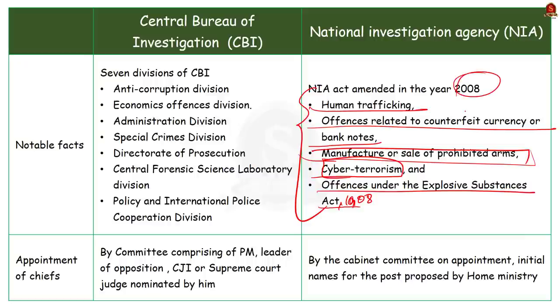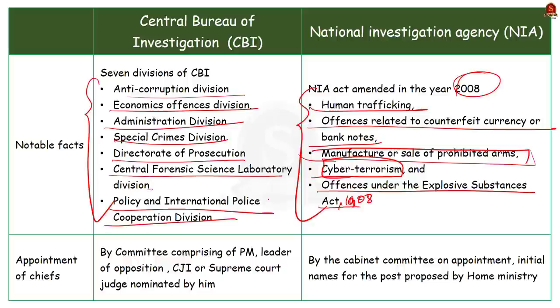Now coming to the organization of CBI. Presently the CBI has seven divisions which are working under the union government. They are firstly anti-corruption division, second is economic offenses division, third is administration division, then special crimes division, directorate of prosecution, central forensic science laboratory division, and finally policy and international police cooperation division. So these are all the seven working divisions of CBI. Here note that the role of special crimes division is supplementary to that of state police. And also remember generally both the chiefs of CBI and NIA are from the Indian police services.